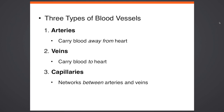There are major types of blood vessels. You have arteries, which carry blood away from the heart — notice A stands for away. Veins carry blood to the heart. And capillaries — these are the smallest type of blood vessels. They can go anywhere; they can go in and out of arteries and veins.